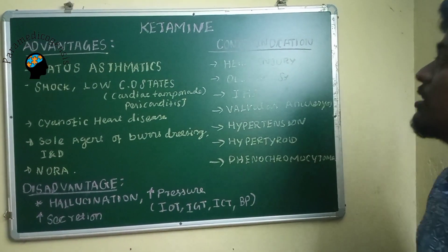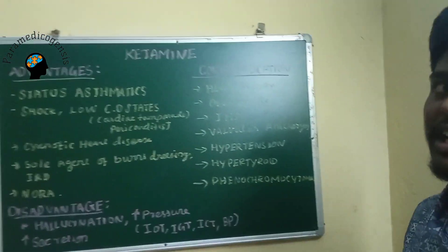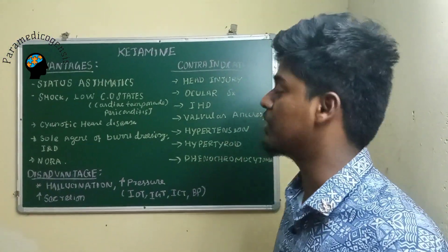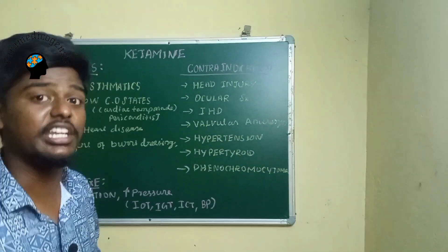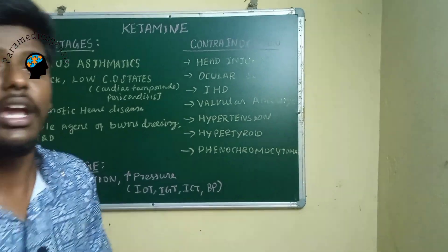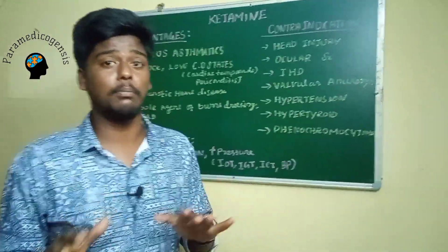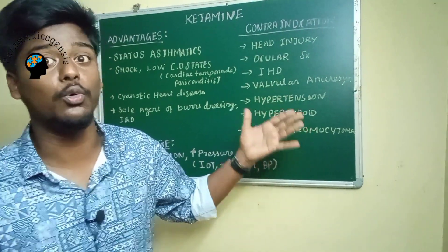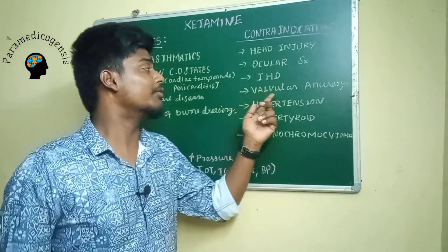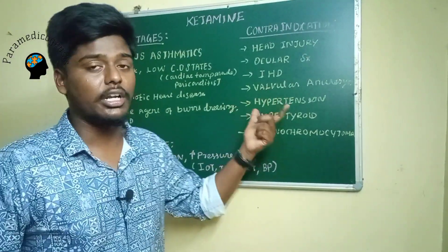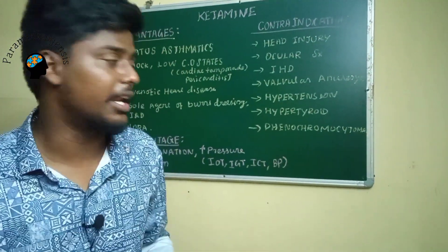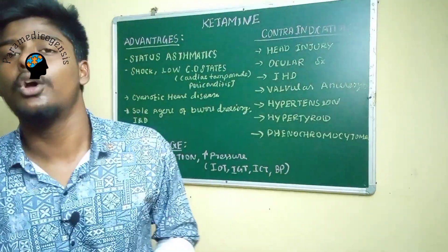The contraindications of ketamine: it is contraindicated in neurosurgical patients due to increased intracranial tension, in ocular surgery due to increased intraocular tension, in ischemic heart disease due to increased myocardial O2 demand causing demand-supply mismatch, in valvular disease, aneurysm, and hypertensive patients due to increased blood pressure, and in hyperthyroid and pheochromocytoma patients.